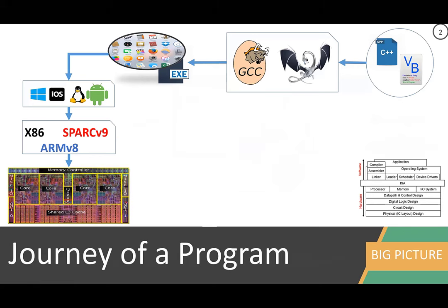So you can map all of this journey of a program into the full stack we discussed. The source code is the application as well as the executable you have. Then you have the compiler, assembler, and linker that takes the application and transforms it into the instruction set. And then the operating system is running the application on top of the hardware.